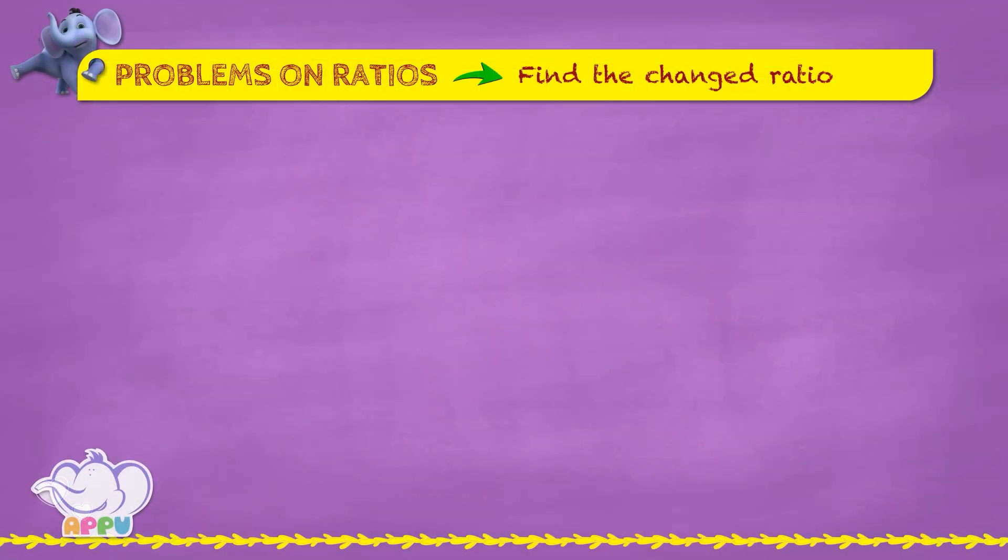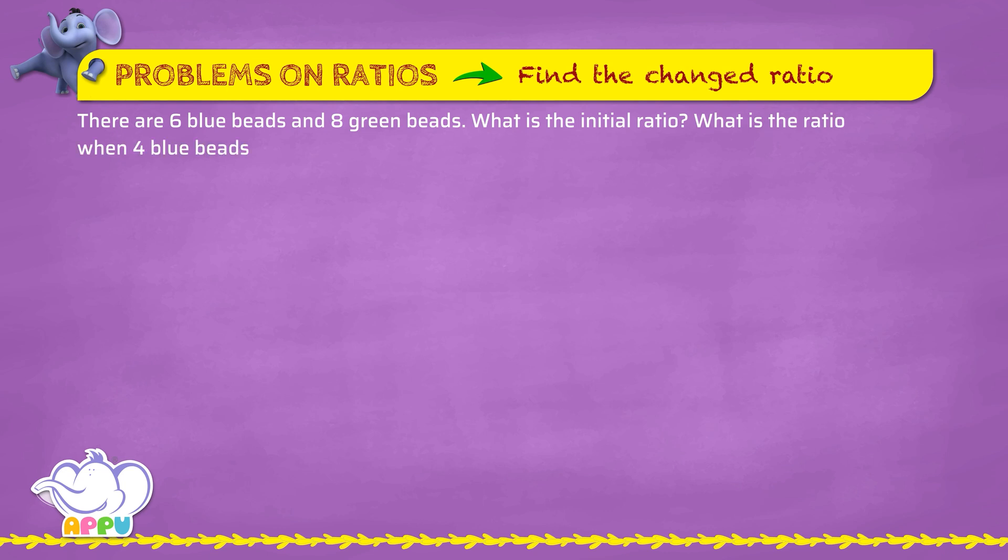Find the changed ratio. There are six blue beads and eight green beads. What is the initial ratio? What is the ratio when four blue beads are added?